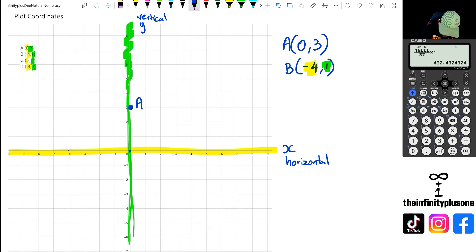So negative 4, and then I want to go to positive 1 along the y-axis. So this point right here, which is negative 4 along the x-axis and positive 1 along the y-axis, point B is going to be negative 4 and 1.